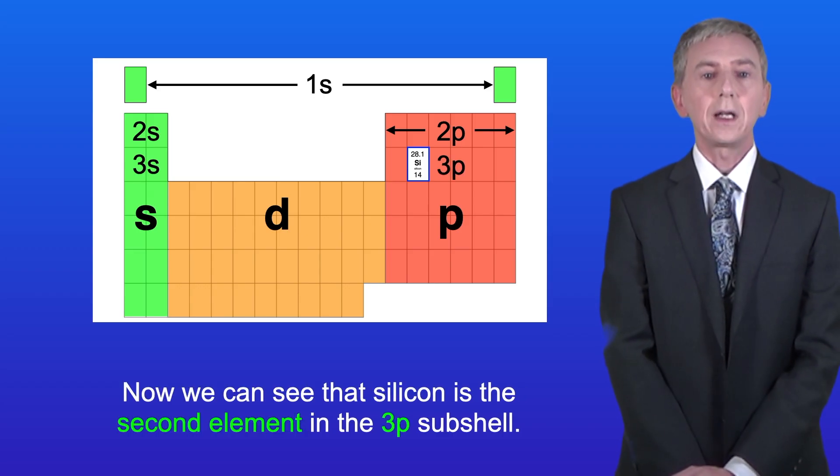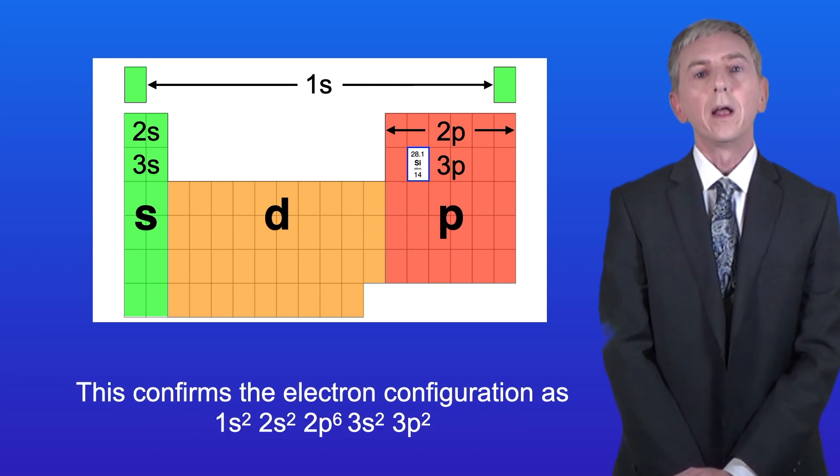Now we can see that silicon is the second element in the 3p subshell, and this confirms the electron configuration as 1s² 2s² 2p⁶ 3s² 3p².